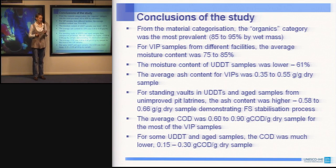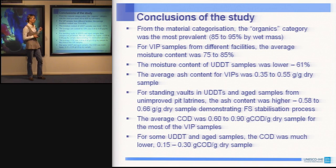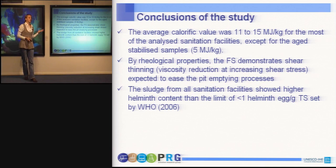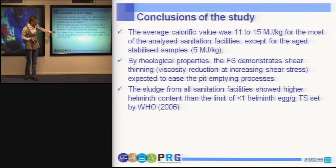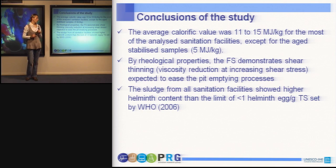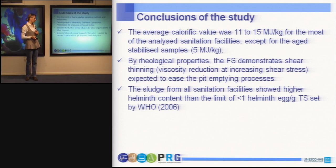The conclusions of the study show 75 to 85 percent moisture content for all VIP samples, and 61 percent for urine diversion toilets. The average calorific value was between 11 to 50 megajoules per kilogram. We also did quite a lot of analysis on helminth eggs or Ascaris content. Most of the helminth eggs demonstrated values higher than the limit set by the World Health Organization, which is one helminth egg per gram of total solids, showing that this sludge needs to be treated further for pathogen inactivation.